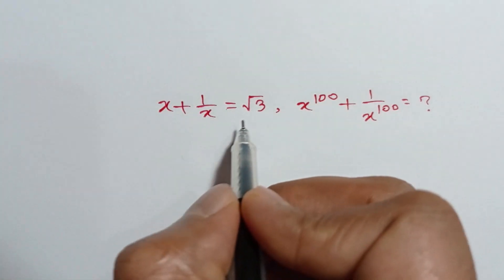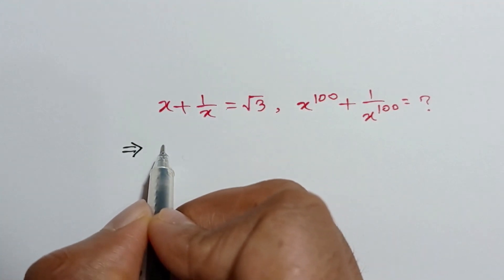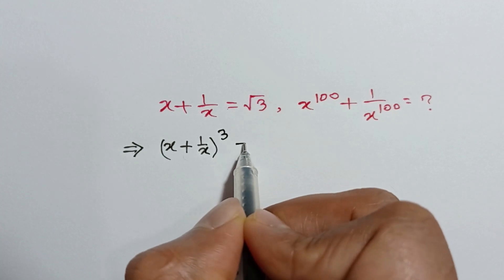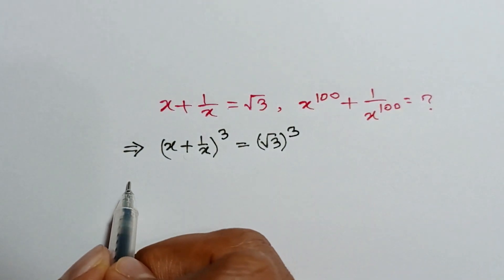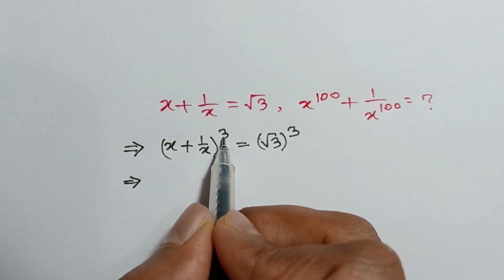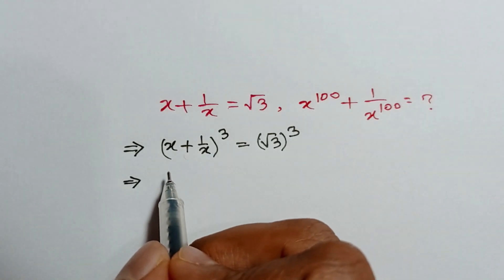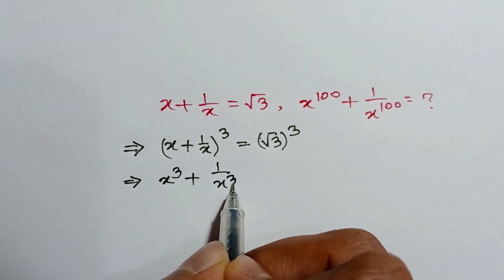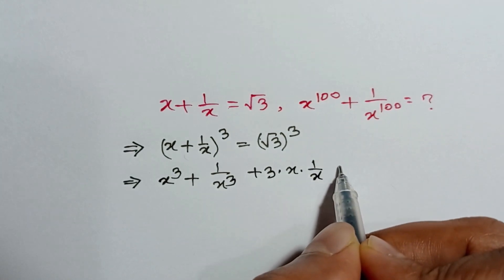So, from the given value, if we cube both sides, we get x plus 1 over x to the power 3 is equal to square root of 3 to the power 3. If we apply the formula a plus b whole cube is equal to a cube plus b cube plus 3ab times a plus b, we get x cube plus 1 over x cube plus 3 times x times 1 over x times x plus 1 over x.